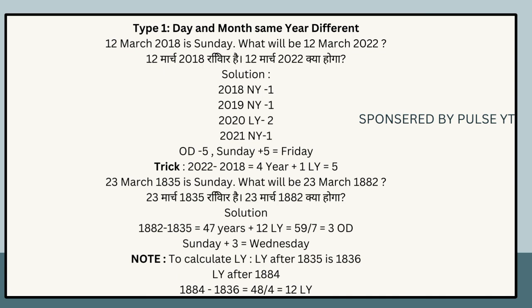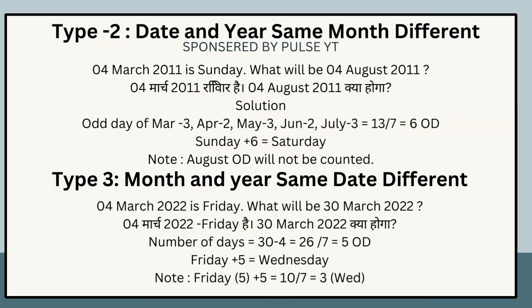Type 2 — Same date and year, different month. The 4th of March 2011 is Sunday; what will be the 4th of August 2011? Note: Only the last year matters, not leap year status for this type.